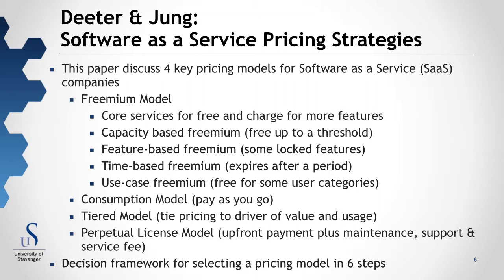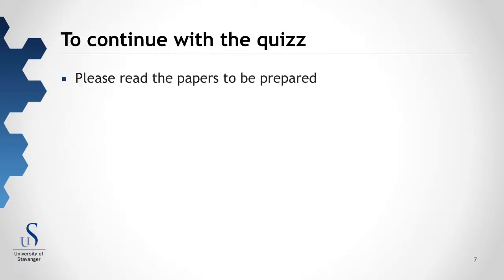The paper also lists a decision framework for selecting a pricing model — one of these four — in a six-step procedure. You should read the papers to be prepared for the quiz, and when you have done so, please continue with the quiz. Thank you.